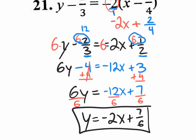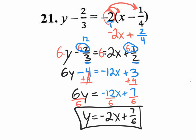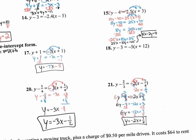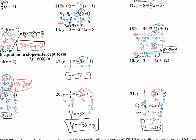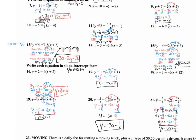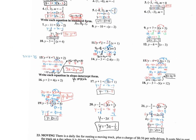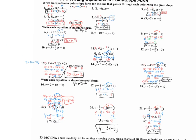That is slope-intercept form. It's okay to have fractions in slope-intercept form. This has been a very long video — those are all the odd questions on this homework. You need to do all of them, so go back and do the even ones and check your answers on the back side of your worksheet.